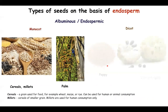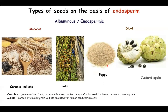The dicot albuminous or endospermic seeds include poppy and custard apple. So on the basis of endosperm, both monocot and dicot seeds can have an endosperm.